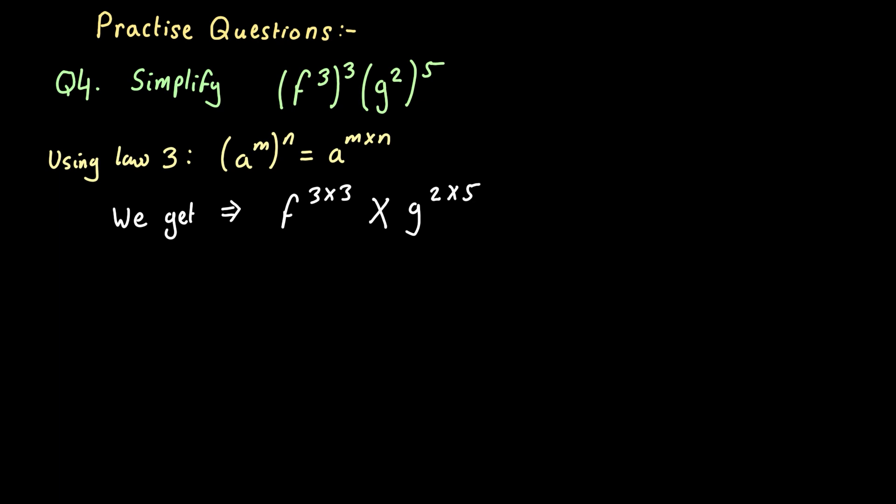So when we multiply the powers together for each base, f and g, we finally end up with f to the power of nine and g to the power of 10.